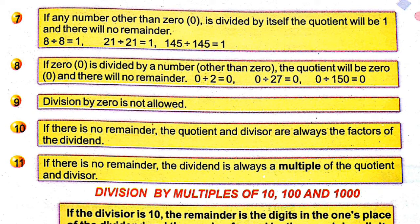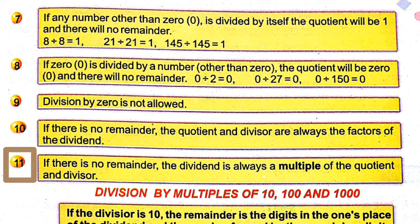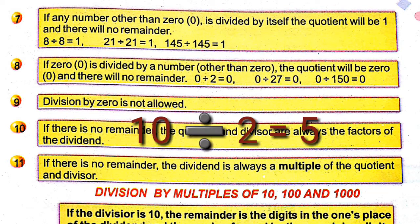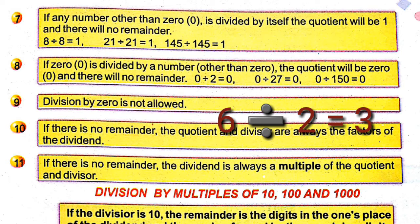Fact 11: if there is no remainder, the dividend is always a multiple of the quotient and divisor. In the example, 10 divided by 2 gives quotient 5 and remainder 0, so 10 is a multiple of 5 and also a multiple of 2. Similarly, 6 divided by 2 gives quotient 3 and remainder 0, so 6 is a multiple of 2 and a multiple of 3.